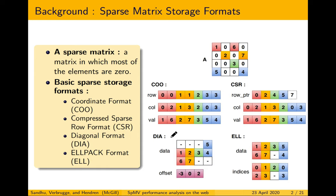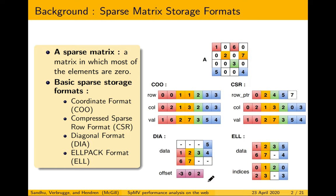Then comes the DIA format. DIA is a very specialized format for matrices which have a diagonal structure — basically matrices whose diagonals are fully packed. We store diagonal data compactly, with minus signs representing padding. Instead of storing row and column values for each element, we store the offset for each diagonal, calculated as column minus row. For example, in the main diagonal for position (2,2), the row is 1 and column is 1, so the offset is 0.